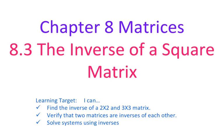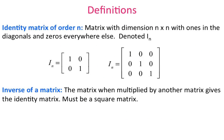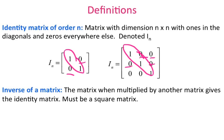The first thing we're looking at are definitions. We have two definitions: the identity matrix and the inverse matrix. The identity matrix is a square matrix with ones along the diagonals and zeros everywhere else. For a 2 by 2, you have ones along the diagonal and zeros everywhere else. Same for the 3 by 3.